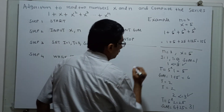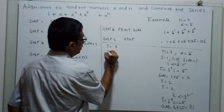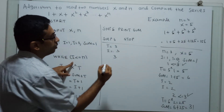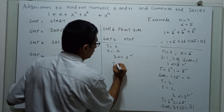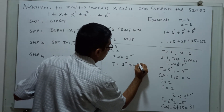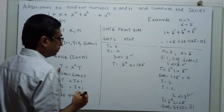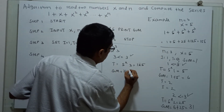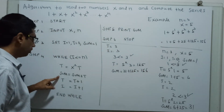Now i equal to i plus 1 and t equal to t plus 1, so t becomes 3 and i becomes 3. We check: 3 less than or equal to 3 — true. t equal to x power t, so t equal to 5 power 3 which equals 125. Sum equal to 31 plus 125 which equals 156.